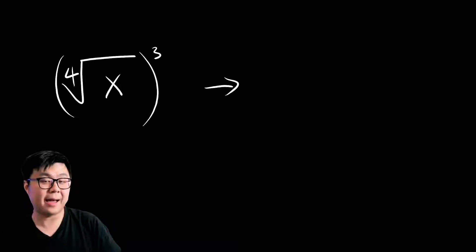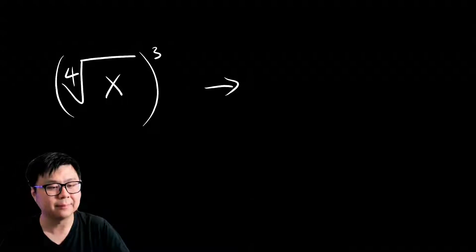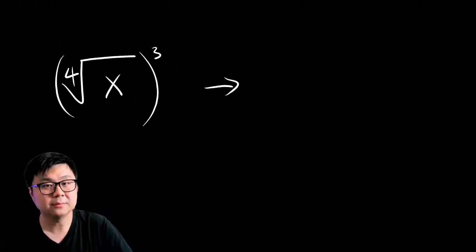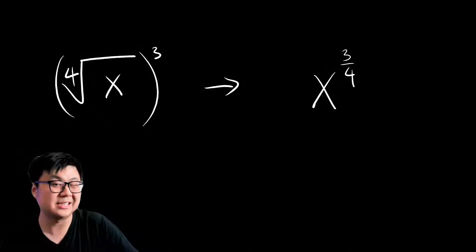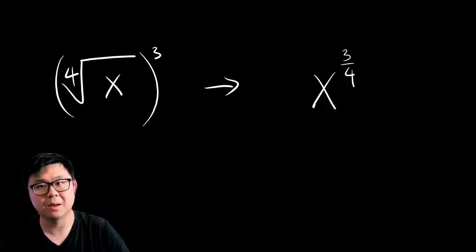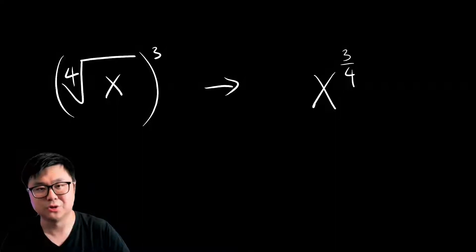Can we go backwards and turn radicals into rational exponents? Absolutely. The x, which is the radicand, stays as the base of the exponent. The 4, which is in the index slot, becomes the denominator, and the 3 stays as the numerator.